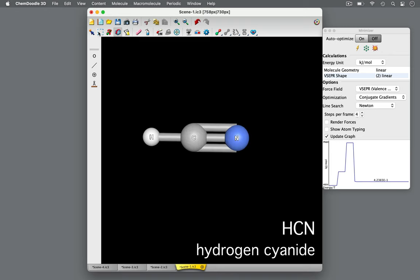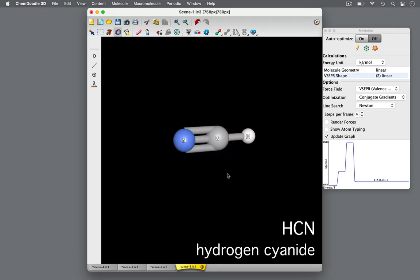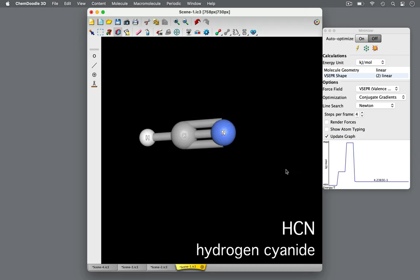Seen here in hydrogen cyanide, the valence electrons in the single and triple bonds on the central carbon atom arrange themselves on opposite sides of the carbon to be as far from each other as possible. In this way, electrostatic repulsions are minimized for the most stable structure with the lowest energy.